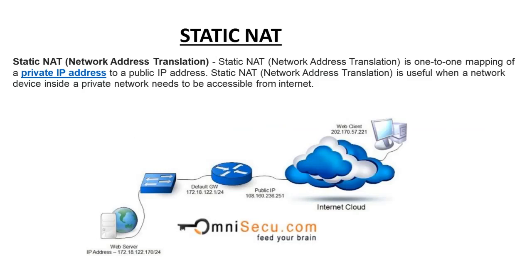Static NAT is a one-to-one mapping of a private IP address to a public IP address. Static NAT is useful when a network device inside a private network needs to be accessible from the internet. Consider we have a web server situated inside our local area network. This web server needs to be accessed by employees in our company as well as the public. So we will assign a public IP address for this web server — we will map this web server to a single unique public IP, and only this public IP will be used for this web server.